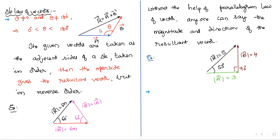In the triangle law, whereas in case one I took two vectors, this time I'm taking three vectors. A triangle has three sides, so I'm taking three vectors.